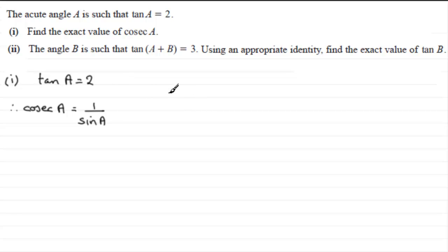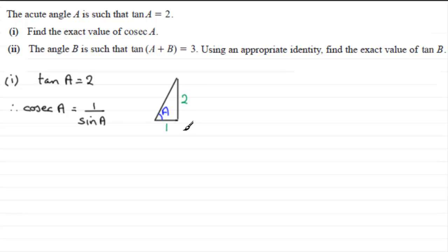The way I can get sine A is to construct a triangle. We know that tan of an angle, and we know A is an acute angle, so if I had a triangle with angle A here, and I compare the opposite side to the adjacent side, we get 2. So I label the opposite side as 2 and the adjacent side as 1. Now I can work out the hypotenuse by Pythagoras' theorem — it's going to be the square root of 4 plus 1, which is root 5.